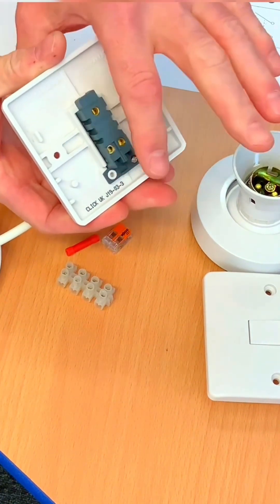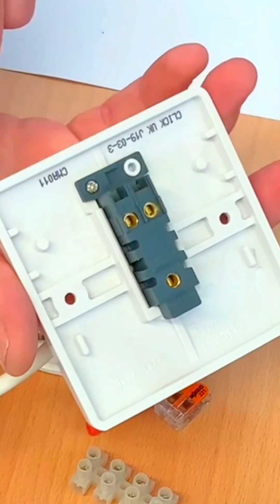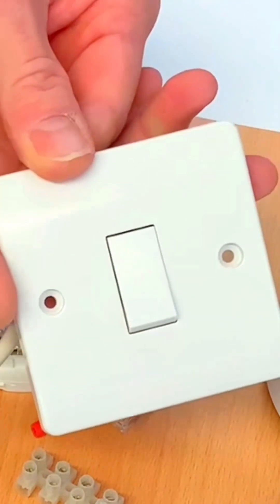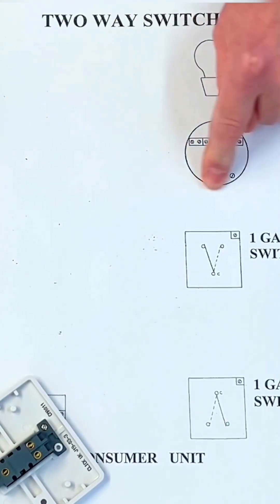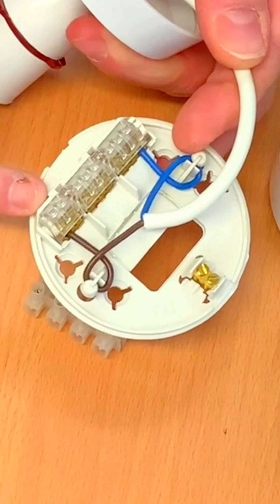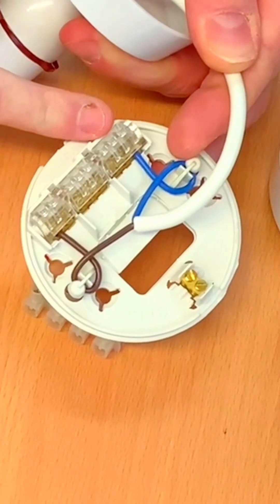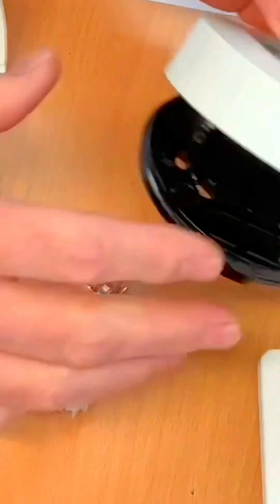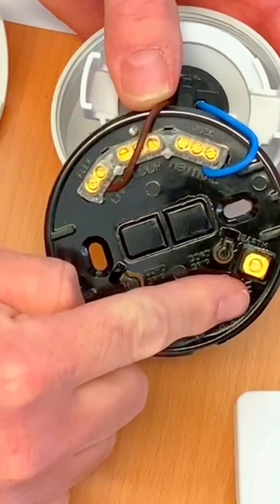It doesn't matter - I could have turned it around. There's common, L1, and L2. It's only important that we get the commons correct, and we'll look at that in the drawing. L1 and L2 can swap as they go between them, but students tend to like to keep them in the same place. So this is a one-gang two-way switch, and we need two of those. We've got here the base of a ceiling rose or pendant, with two terminals for switching line, insulated away from three terminals for the loop, three terminals for the neutral, and a connection for our circuit protective conductors.